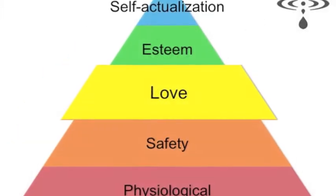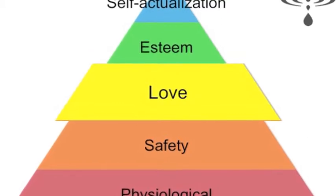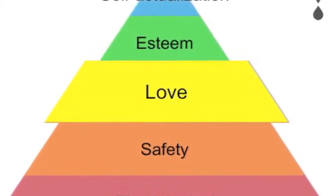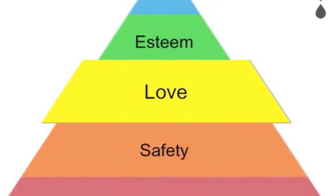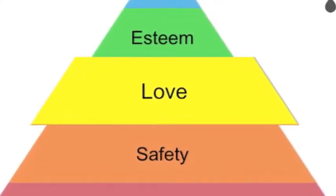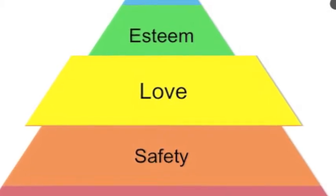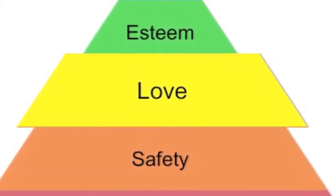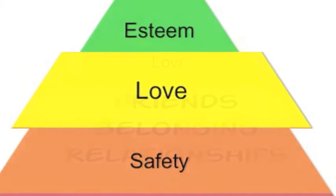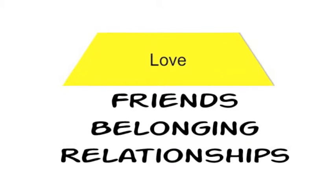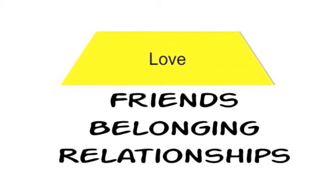In the middle of Maslow's pyramid we have the emotional needs — the love needs. Once a person has satisfied the lower physiological and safety needs, higher needs become more important and more possible. Our need for friends, our sense of belonging, and our ability to grow and receive love are all examples of emotional needs that we consolidate in this stage of our development.